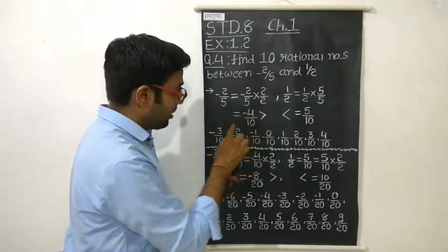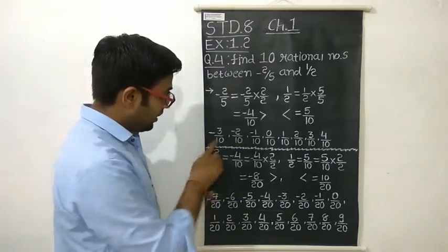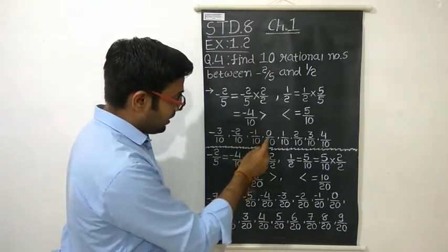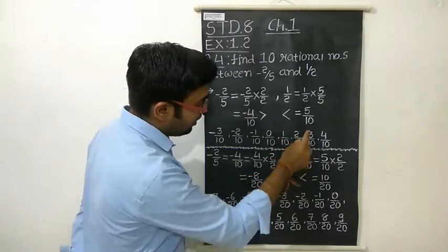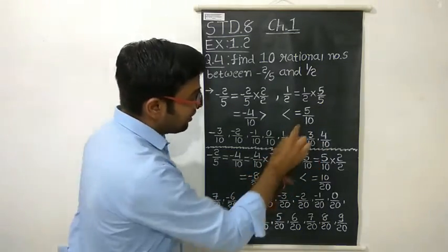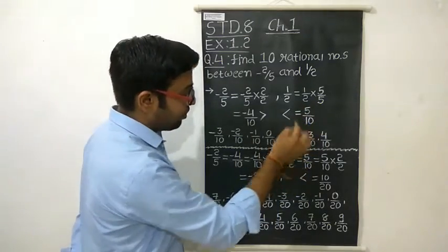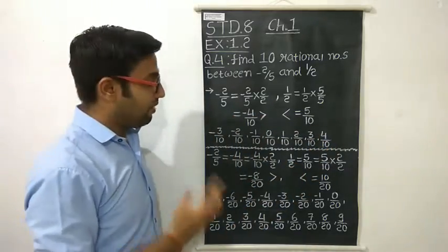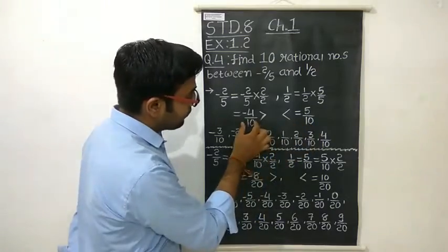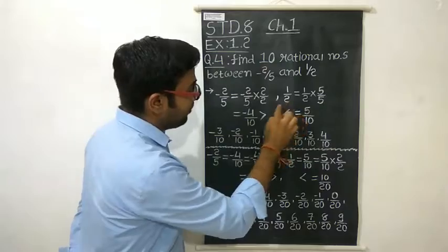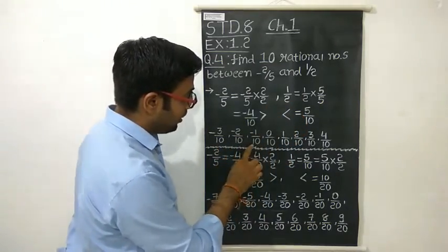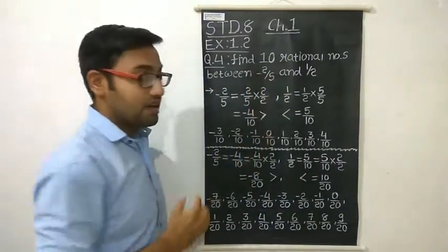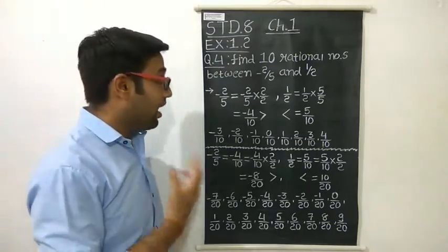The numbers greater than minus 4/10 are: minus 3/10, minus 2/10, minus 1/10, 0/10, 1/10, 2/10, 3/10, and 4/10. Here is the limit — we do not take 5/10 because the number must be less than 5/10. So between minus 4/10 and 5/10, counting these numbers: 1, 2, 3, 4, 5, 6, 7, 8 — we get only 8 numbers. But the question asks for 10 rational numbers, so we need to do more.